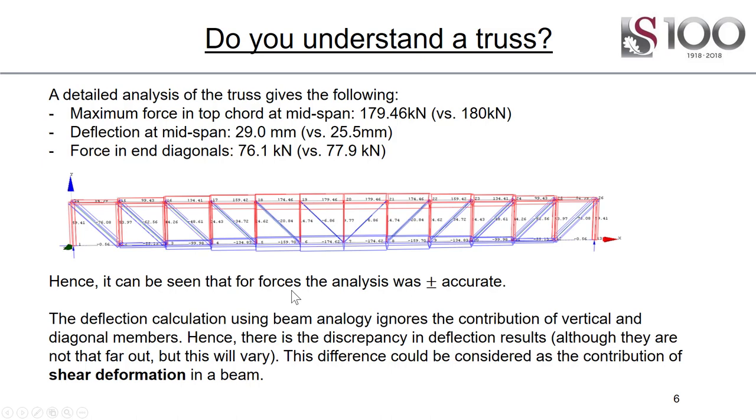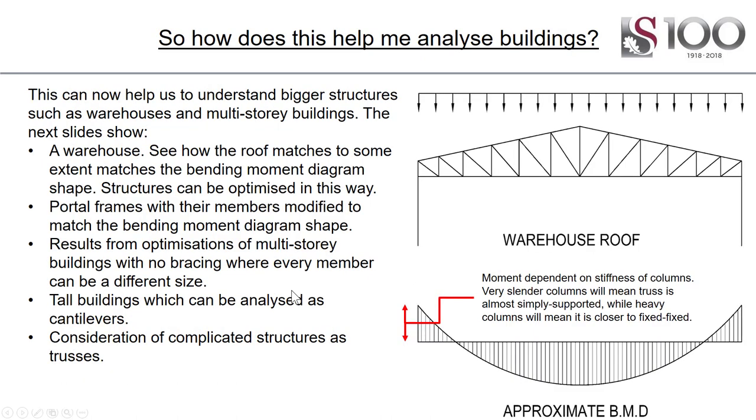We can use this truss-to-beam and beam-to-truss analogy to start understanding structures and load rundowns. This can help us understand bigger buildings such as warehouses and multi-story buildings. See how the roof matches to some extent the shape of the bending moment diagram. Structures can be optimized in this way. The truss is much deeper in the middle and shallower at the side, which is also just to do with practicalities.